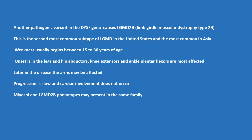Hip abductors, knee extensors, and ankle plantar flexors are most affected. Later in the disease the arms may be involved. Progression is slow and cardiac involvement does not occur. Miyoshi and LGMD2B phenotypes may be present in the same family.